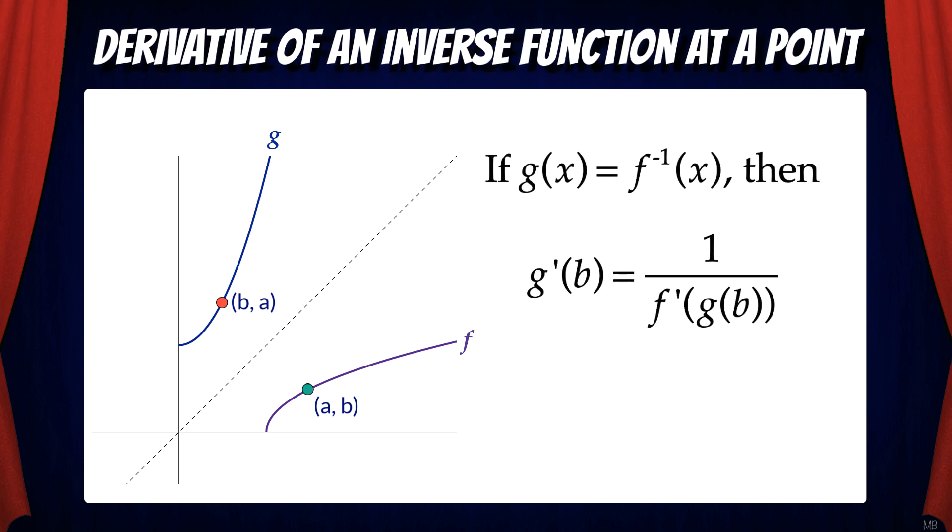If g of x is the inverse of f of x, then g prime of b equals 1 over f prime of g of b. Remember what this is saying. We want the slope of the tangent at b on the g graph, and we don't know what this is.